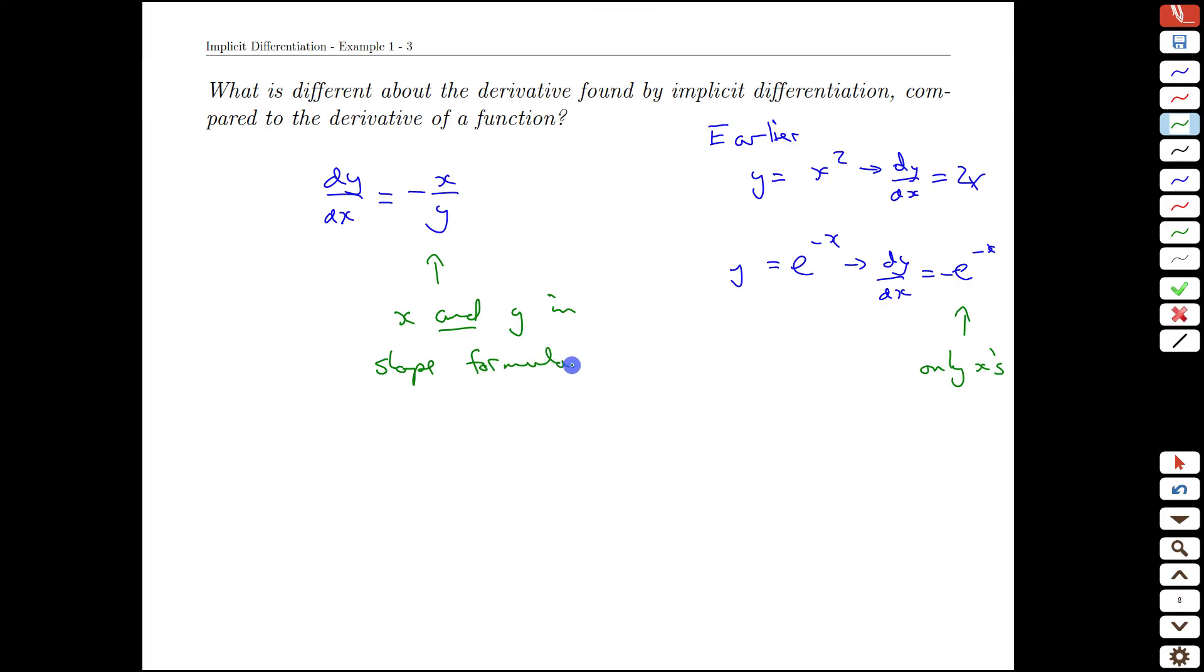Not a problem, but just something new, and it makes sense that we would need that of course, because if we think back to our circle, it wouldn't be enough to say what's the slope at x equals 2, because there's actually two points on that circle where x equals 2.